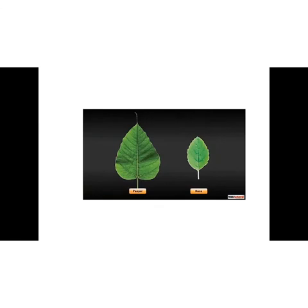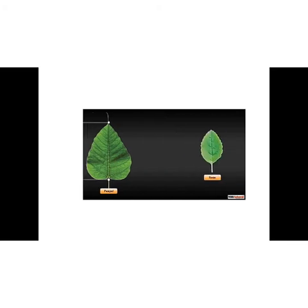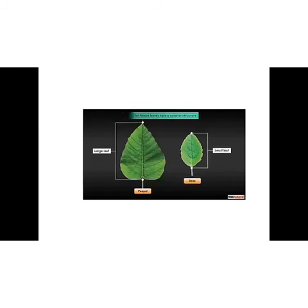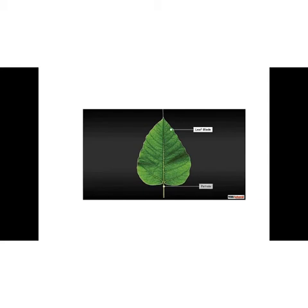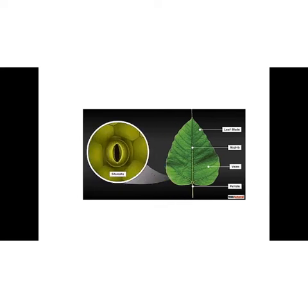You can see that leaves have different shapes and sizes. Some trees, like the peeple tree, have large leaves, while others, like the rose plant, have small leaves. Even though leaves look different, they have a common structure. A leaf is made up of different parts: the leaf blade, petiole, midrib, veins and stomata. Let us learn about each of them one by one.